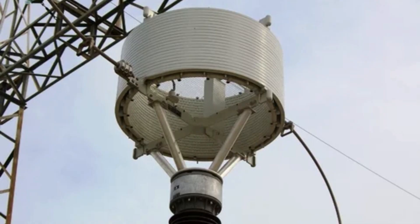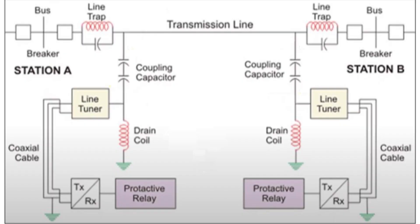The Wave Trap is placed after the Capacitive Voltage Transformer and is essentially a choke coil. It prevents high-frequency carrier signals from entering the substation by offering high impedance to those signals, while still allowing the 50 Hz power frequency to pass. This ensures that the communication signals stay on the transmission line where they belong.